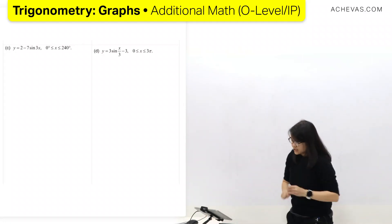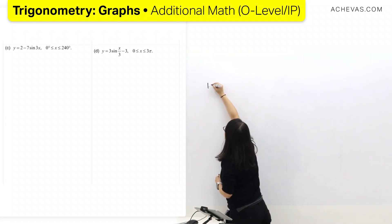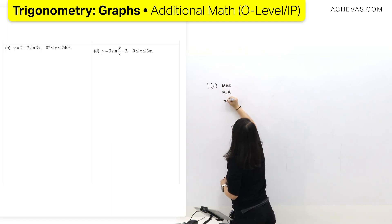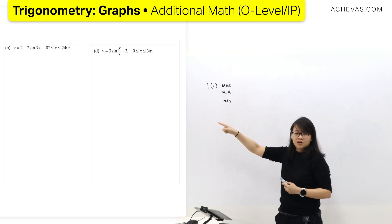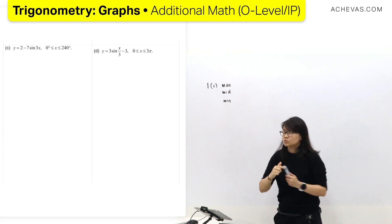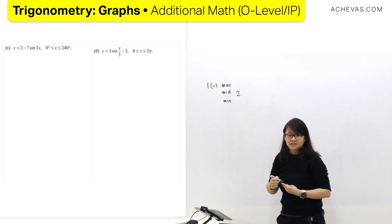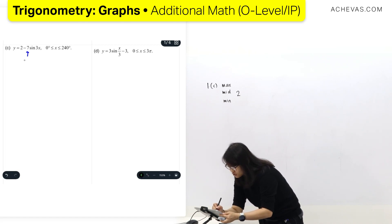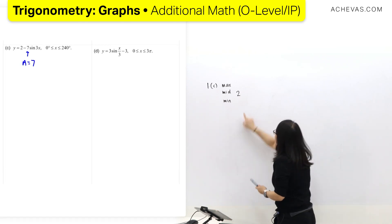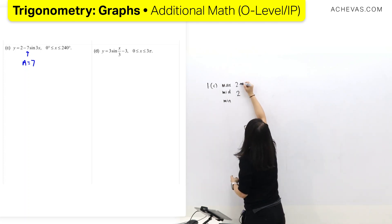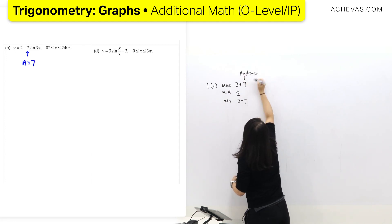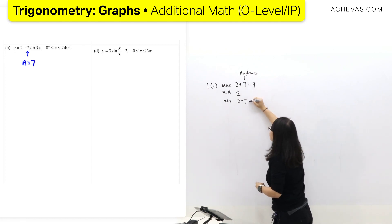I'm going to repeat the process again. I put middle, maximum, minimum, then I take a look at the standalone number: two. Now it's a tricky part — remember we say amplitude, we don't want to care about the sign. So the amplitude is just seven. I take the two plus seven, and I take the two minus seven. So I calculate: two plus seven is nine, two minus seven is negative five.